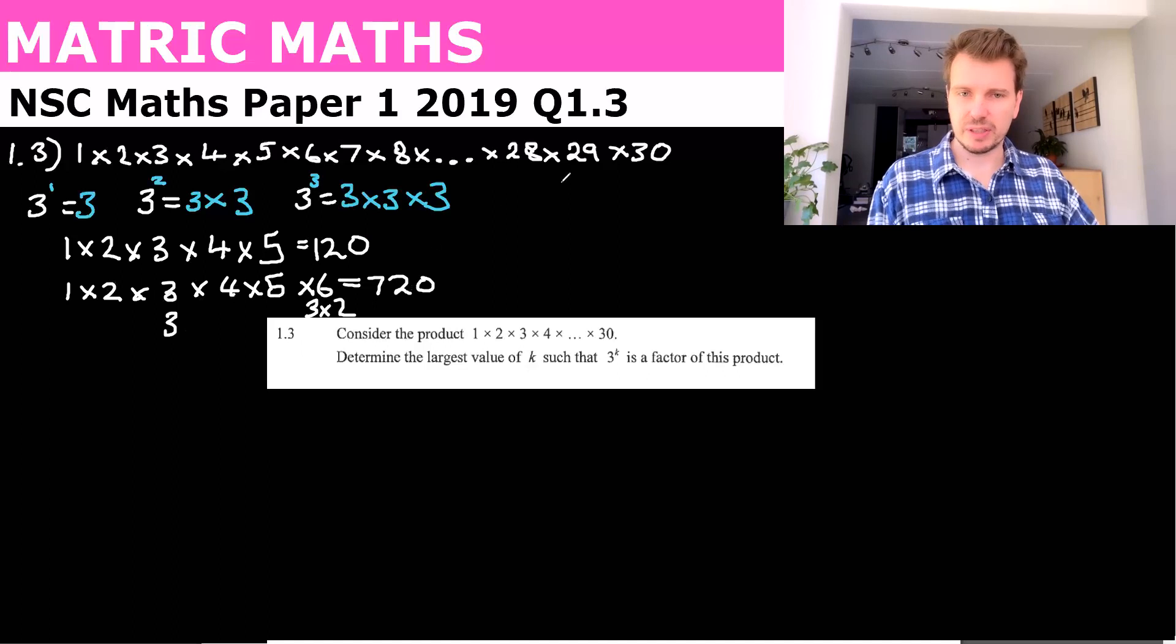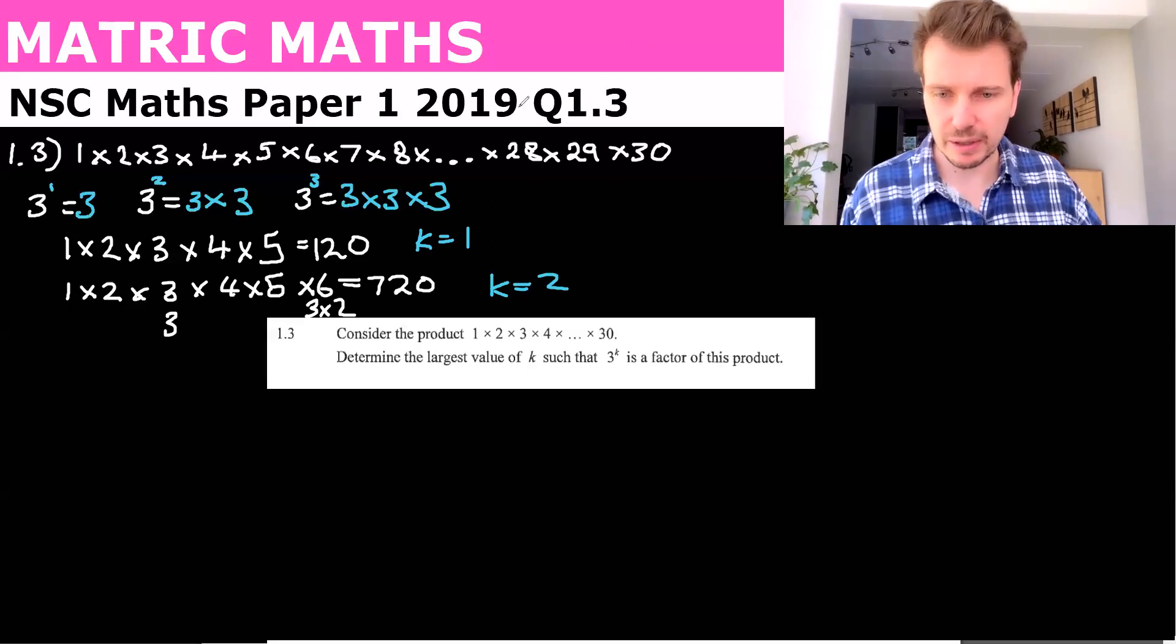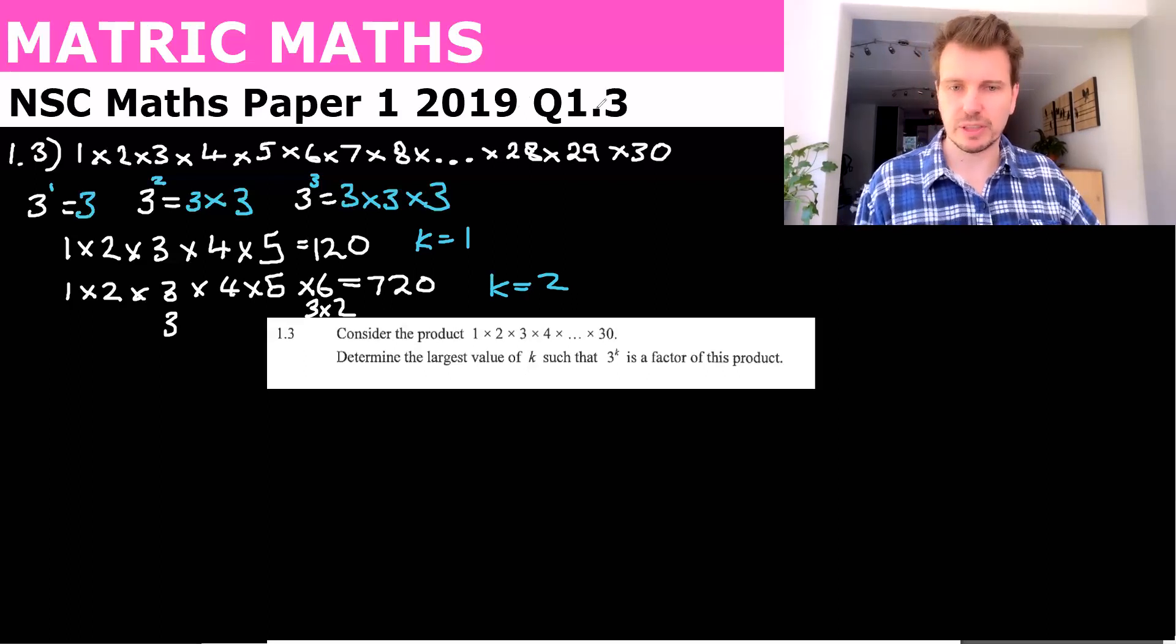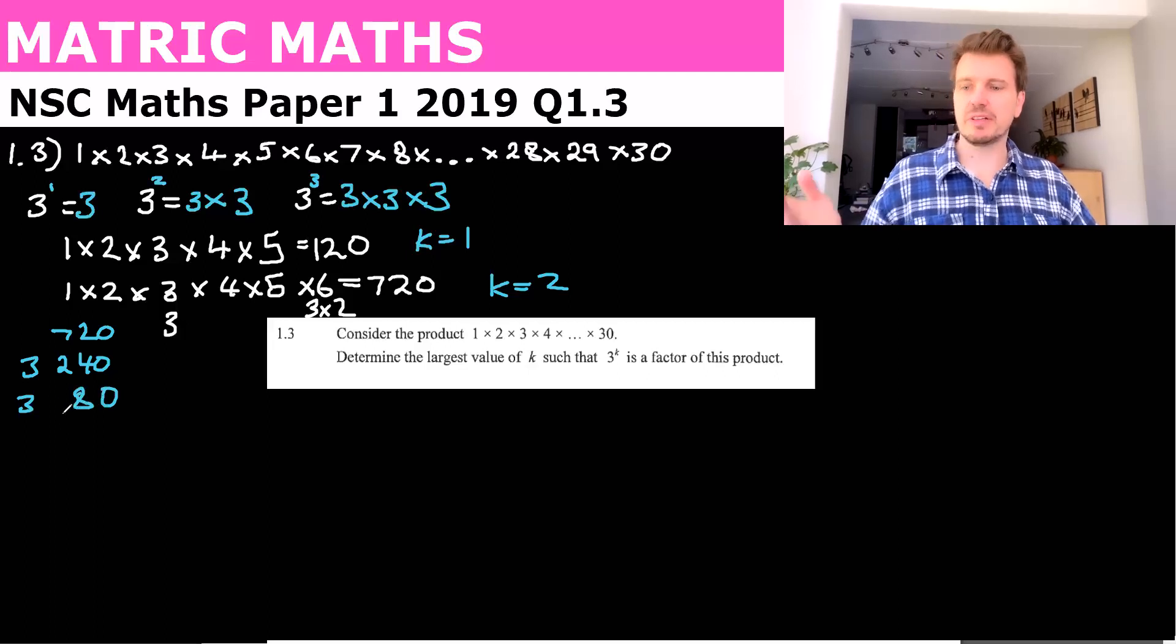So if the question was this, for the first one, the answer would be k equals 1, because there's only one 3. In this one, it would be k equals 2. And we can test that by saying, what's 720 divided by 3? Well, that's 240. And then 240 divided by 3 again is 80. And 80 divided by 3 does not go. So we can see that it goes just twice.